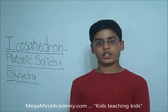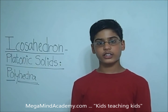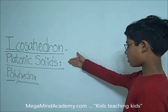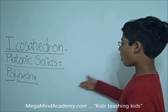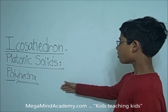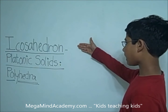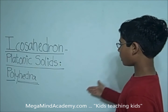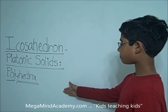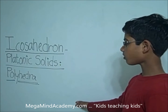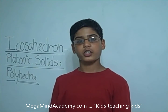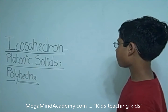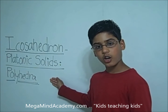Hi, today we are going to learn about icosahedron, platonic solids, and polyhedra. Icosahedron is a type of platonic solid, which is a type of polyhedra. Before we learn about icosahedron, let's first learn about polyhedra.